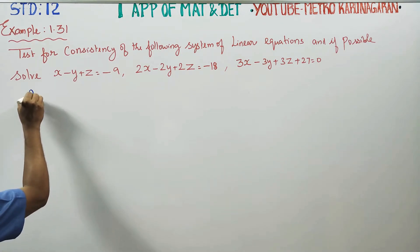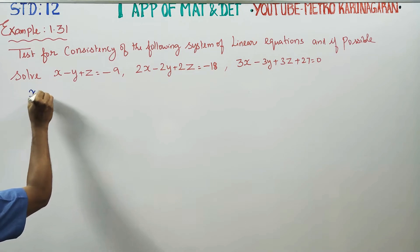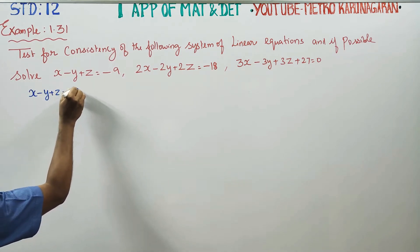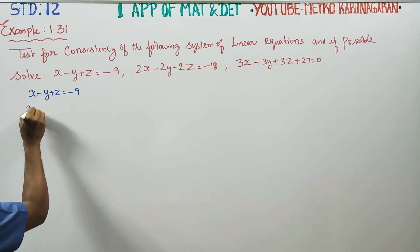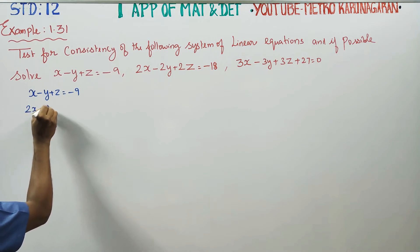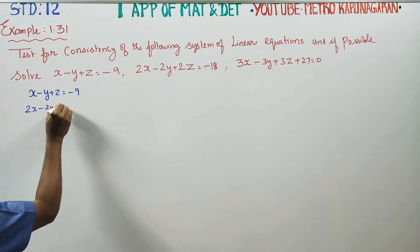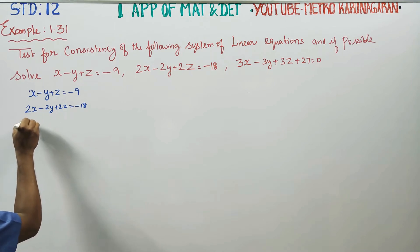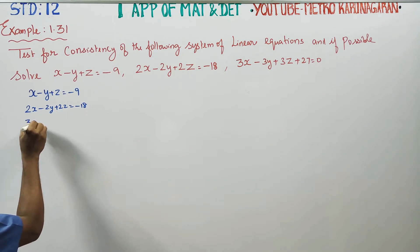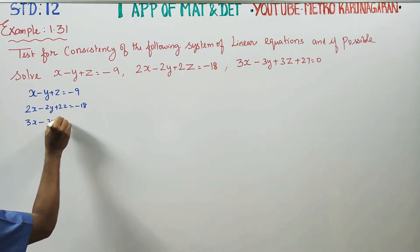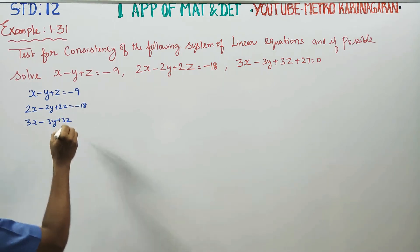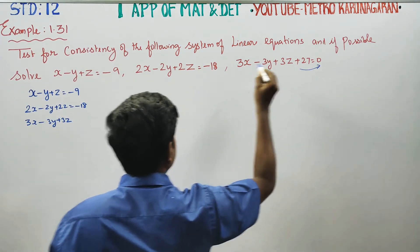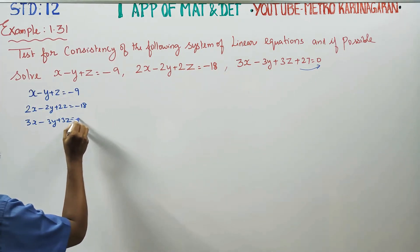Number 1: the first equation is x minus y plus z is equal to minus 9. Second equation: 2x minus 2y plus 2z is equal to minus 18. Third equation: 3x minus 3y plus 3z is equal to minus 27.